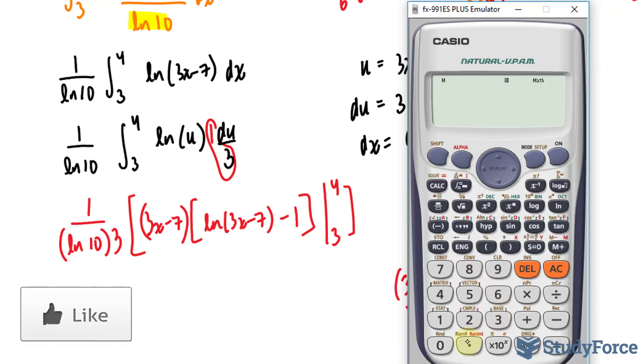3 times 4 minus 7 is 5. 3 times 4 is 12 minus 7 is 5. So 5 times all of this, where we have ln of 5. Remember, that's 5 minus 1.